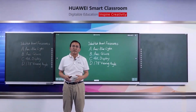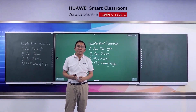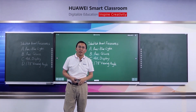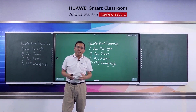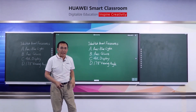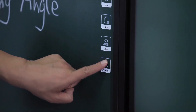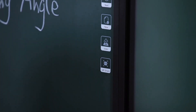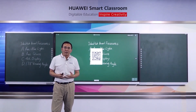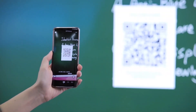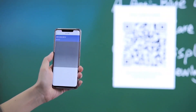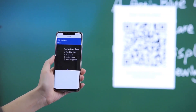In addition, students can take away the contents on the blackboard at any time by scanning a QR code for after-class review. The QR code can be generated and displayed, and students can scan it to take away the whole class notes.